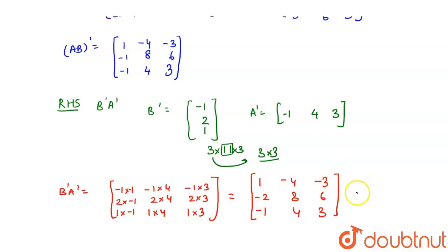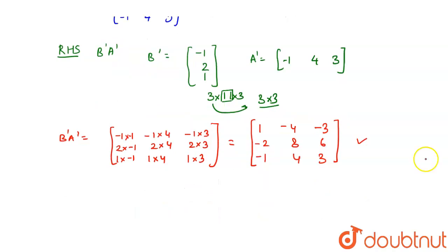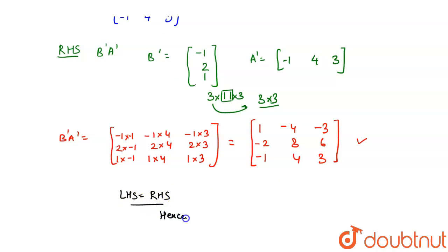So this is my BᵀAᵀ and this is my (AB)ᵀ. As I can see, both of them are equal. So I can say that LHS is equal to RHS. Hence proved. I hope you understood the explanation. Thank you.